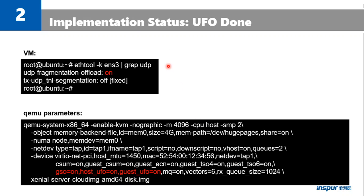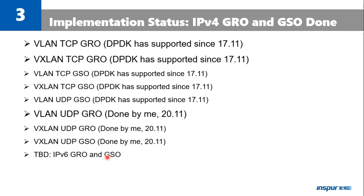Here, let's check our implementation status. We have UFO support — you can see VM UDP fragment offload is on. Of course, we need to add this UFO option to QEMU to support this. We have also done IPv4 GRO and GSO support.